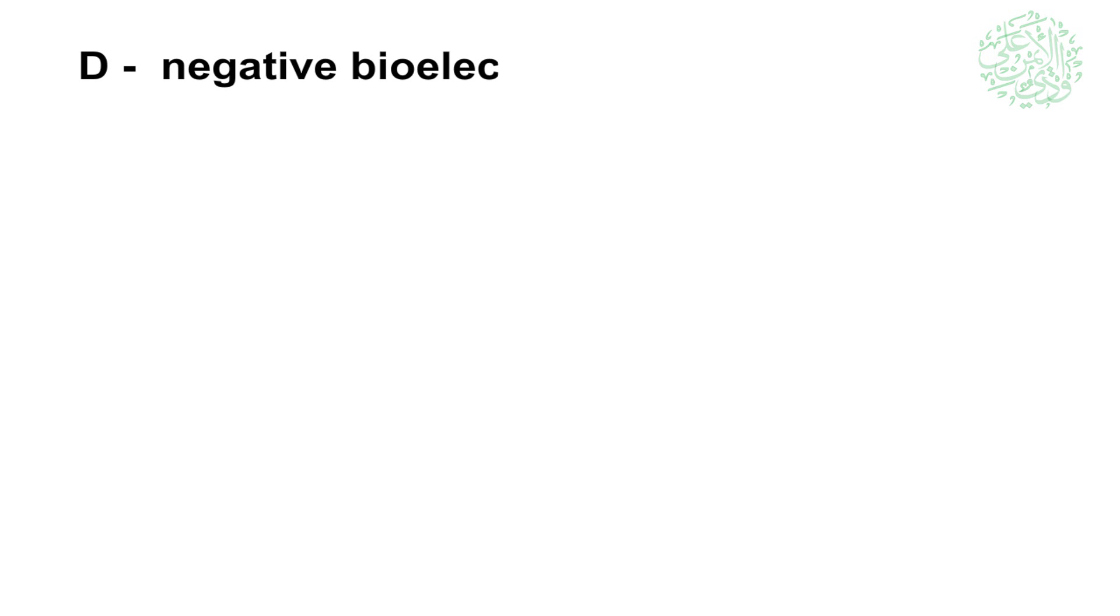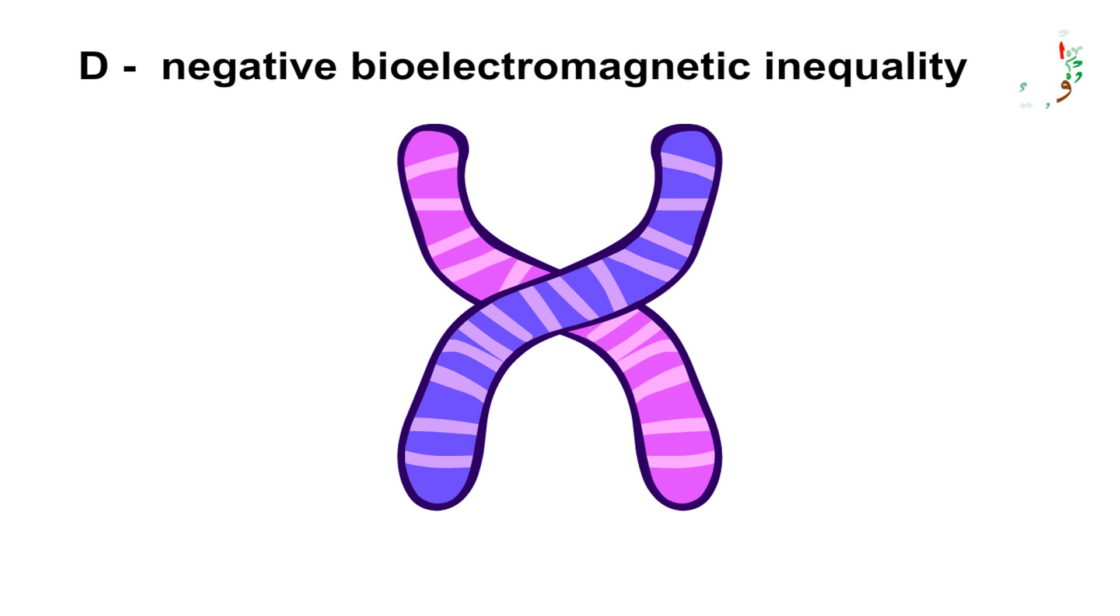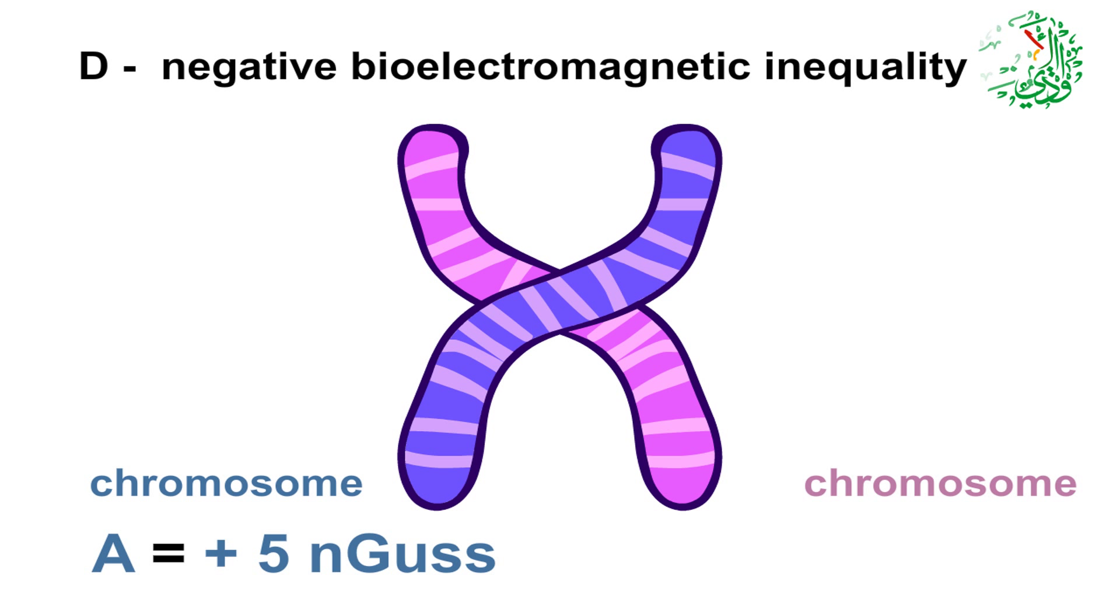Negative bioelectromagnetic potential difference. In this form of inequity, if chromosome A1 has plus five nanogausse electromagnetic charge, chromosome B1 will have more than minus five nanogausse.